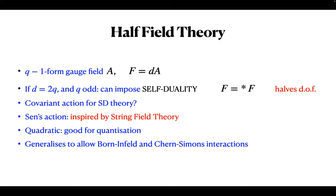The approach I'm going to talk about today is one proposed by Ashok Sen, which was inspired by string field theory. He constructed a string field theory for type IIB string, and since type IIB supergravity includes a four-form gauge field with self-dual field strength—exactly an object of this kind where d equals 10 and q equals 5—that string field theory needed to include a solution of how to do this. This approach gives an action which is quadratic, well-set up for quantization, and generalizes to allow Born-Infeld and Chern-Simons interactions.